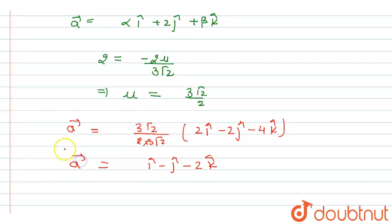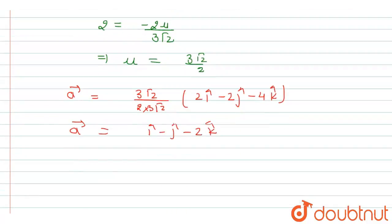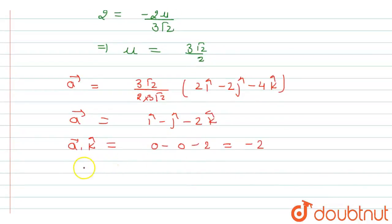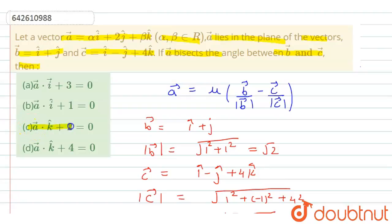We have obtained vector a = î − ĵ − 2k̂. Now checking the options: when vector a is dotted with k̂, the result is −2 (since î·k̂ = 0, ĵ·k̂ = 0, and −2k̂·k̂ = −2). Therefore, a·k̂ + 2 = −2 + 2 = 0. So option 3 is the correct option, which states that a·k̂ + 2 = 0.